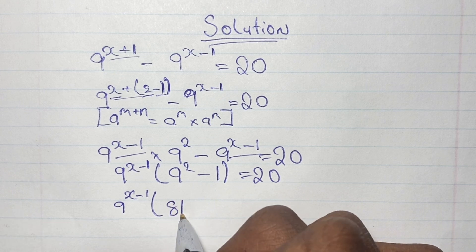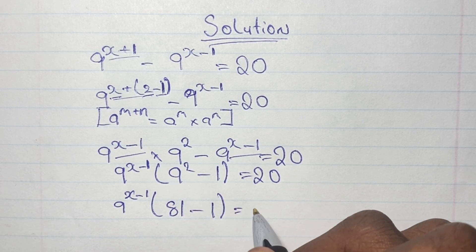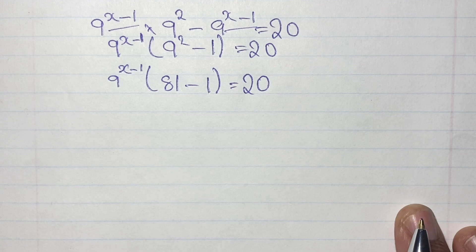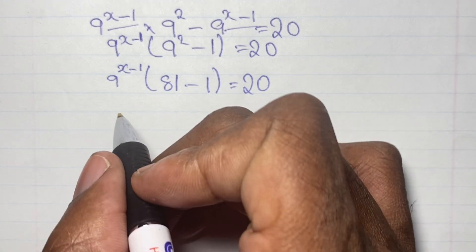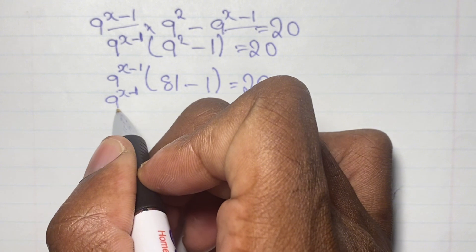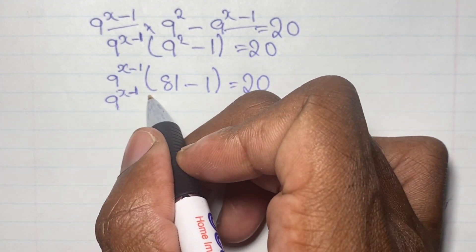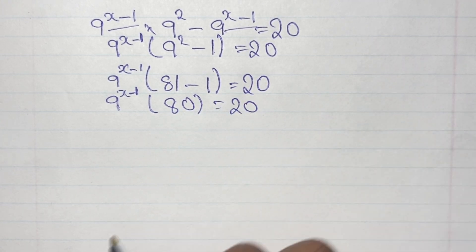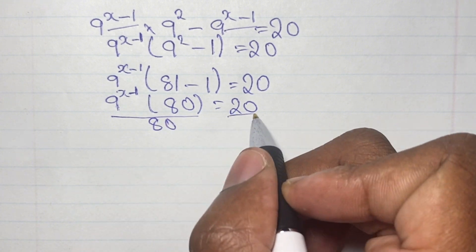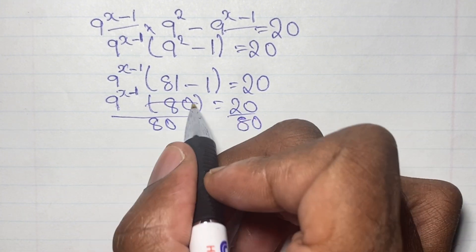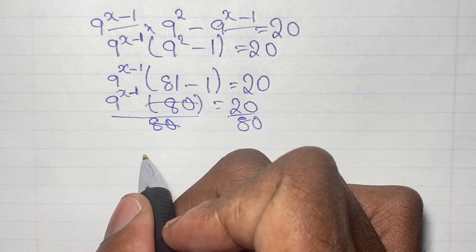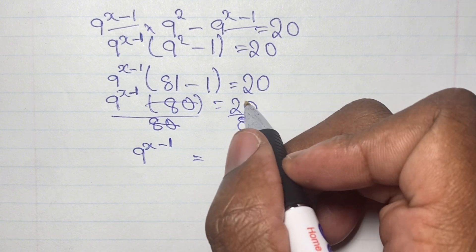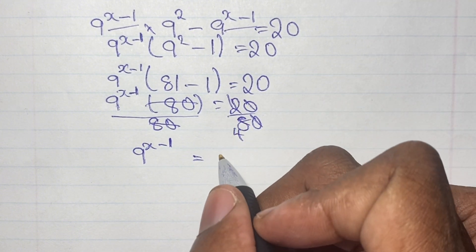9 squared is 81, so the bracket becomes 81 minus 1, all equal to 20. We then have 9 to the power of x minus 1, times 80, equals 20. Dividing both sides by 80 cancels the 80 on the left, and on the right we get 20 over 80, which gives us one quarter. So 9 to the power of x minus 1 equals one quarter.